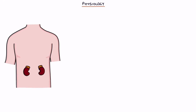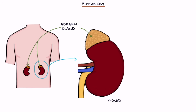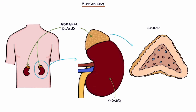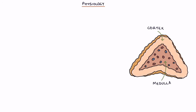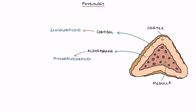Let's start with some basic physiology. There are two adrenal glands found in the abdomen; the adrenal glands sit on top of the kidneys. The outer part of the adrenal gland is called the cortex and the inner part is called the medulla. The adrenal cortex produces two types of steroid hormones: cortisol, which is a glucocorticoid, and aldosterone, which is a mineralocorticoid.